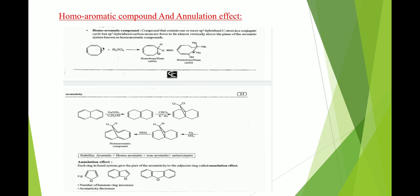A homo-aromatic compound contains one or more sp3 hybridized carbon atoms in a conjugated cycle, but those sp3 carbons are forced to lie almost vertically above the plane of the aromatic system. For example, cyclooctatetraene reacts with acid to form the homotropylium cation, where the sp3 hybridized atom lies above the plane of the aromatic system. The stability order is: aromatic > homo-aromatic > non-aromatic > anti-aromatic.